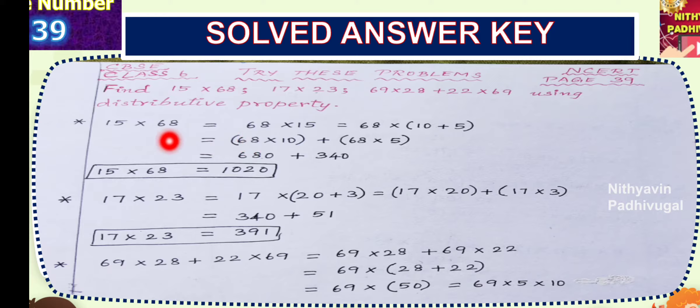Find the products 68 into 10 and 68 into 5. They are respectively 680 and 340. Now, add them together. 0 plus 0, 0. 8 plus 4, 12. 2 is here, 1 is carried over. And 1 plus 6, 7. 7 plus 3, 10. So, 1020 is the answer for 15 times 68.